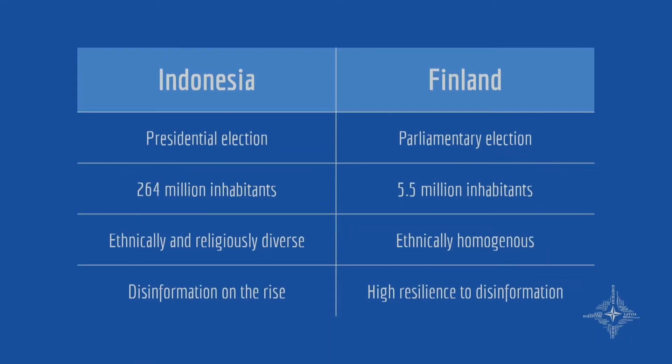To give you a bit of context on both case studies: Indonesia is the fourth most populous country in the world with a population of over 264 million inhabitants. It is very religiously and ethnically diverse and contains the world's largest Muslim population. Its voters are still influenced by ethnic and religious sentiments, and the main issue of this election was whether Indonesia should adopt a more Islamic political course or maintain a more secular course. On the other hand, Finland is one of the most sparsely populated countries in Europe, with an ethnically homogenous population of around 5.5 million. The main issues in this election were climate change, social welfare and immigration. Recently, Finland ranked first in a study of 35 countries on resilience to fake news and ranked with very high media literacy.